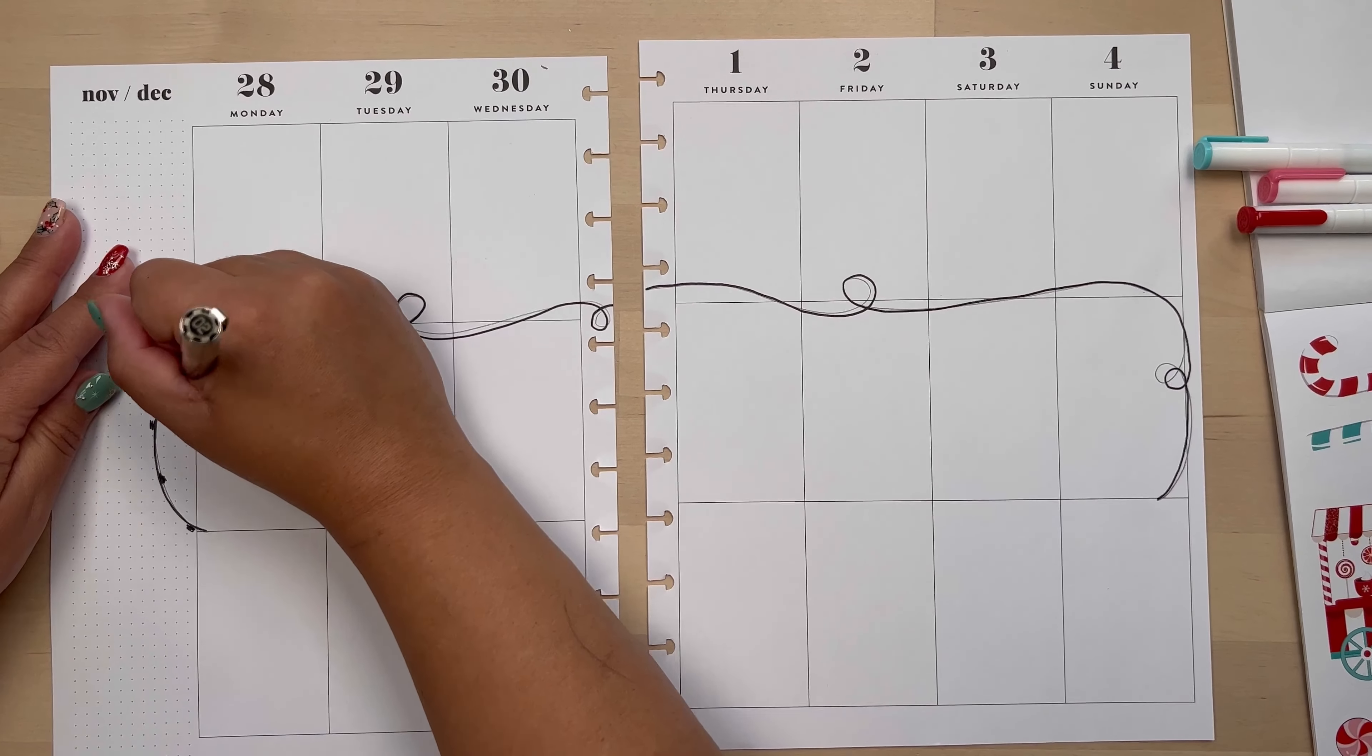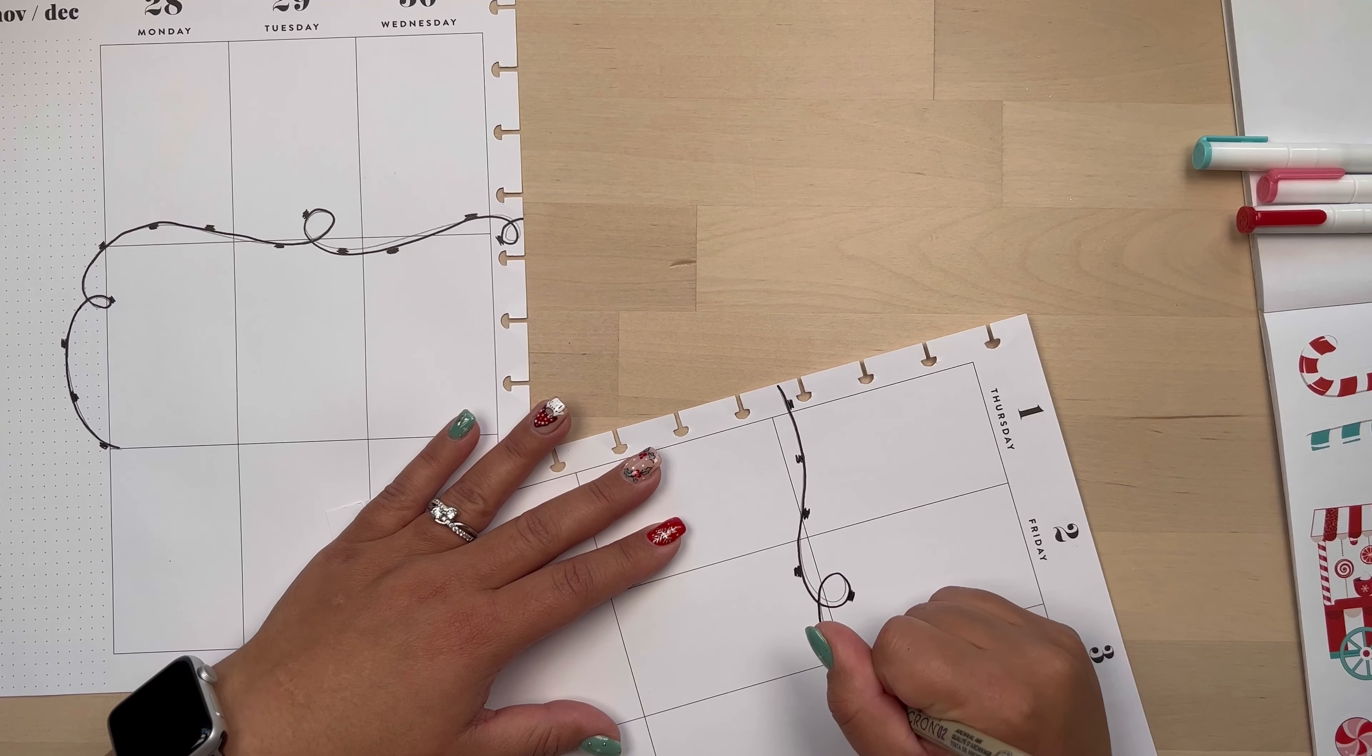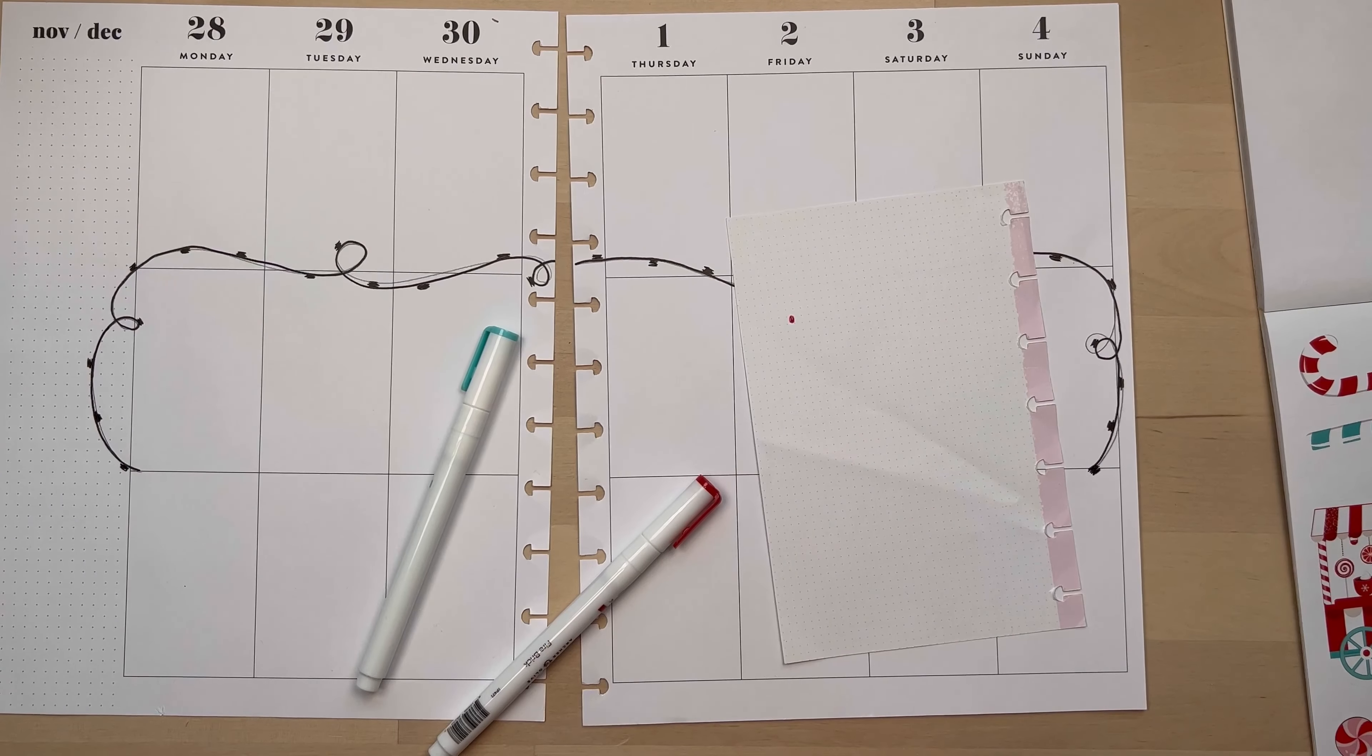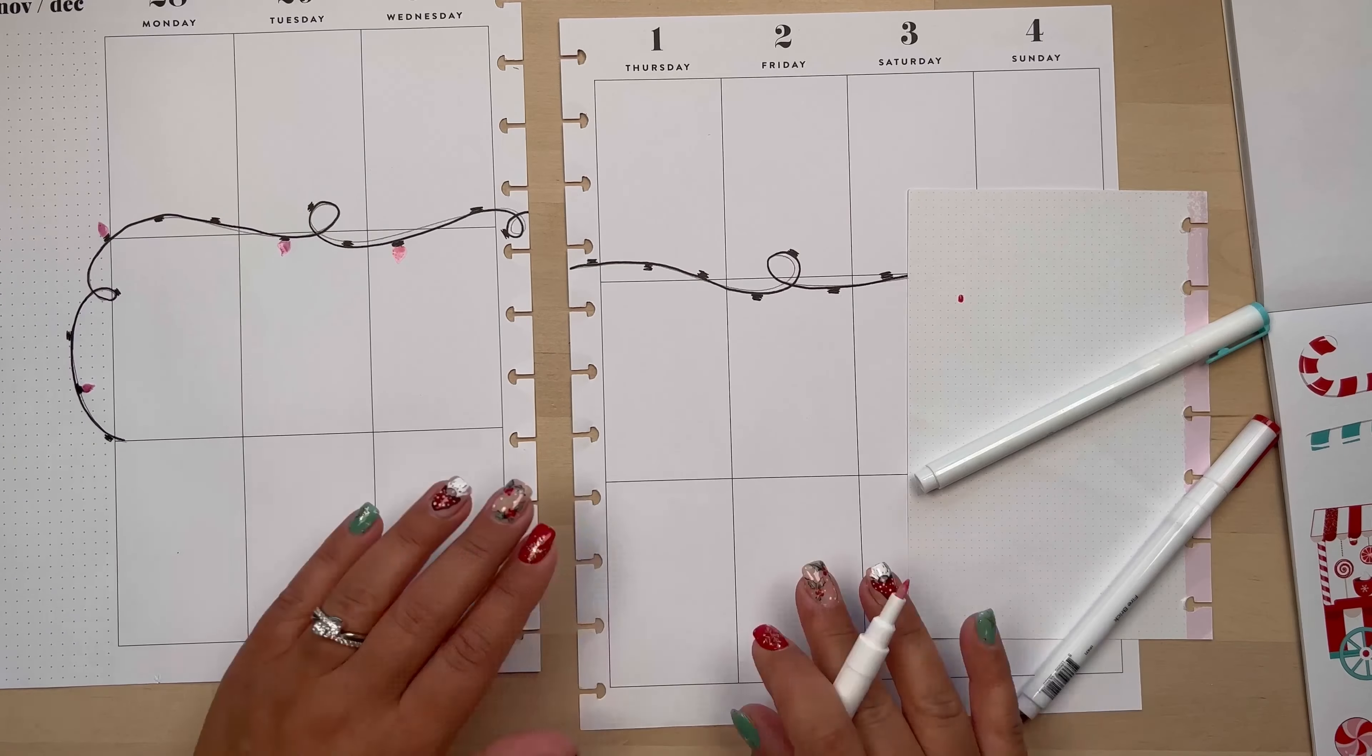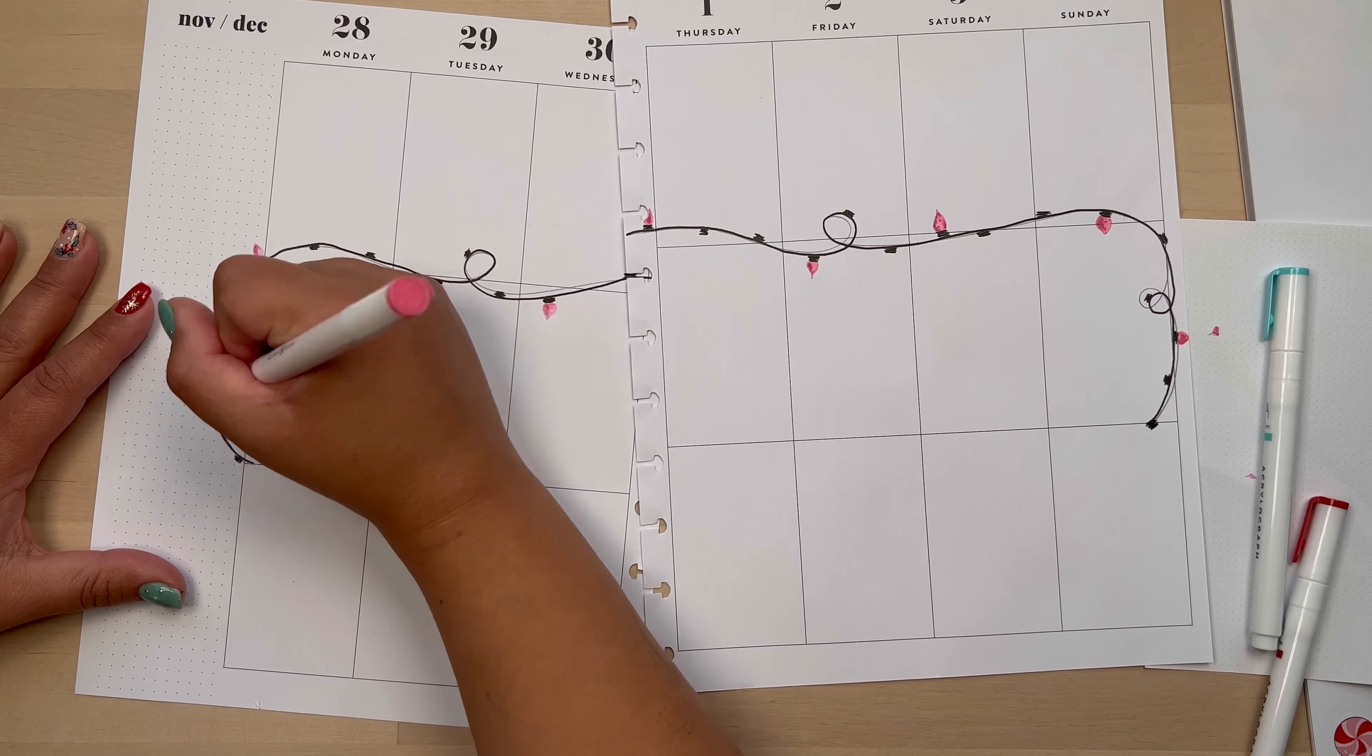So I did use first a pencil to trace where I wanted my Christmas lights. Then I took a Pigma Micron 0.8 and I did my cable for the lights. Then I used a Pigma Micron 0.2 to do the light sockets. Now I am taking the colors pink and I'm going to alternate it. As you can see, I start really small with my lights and then once I got to the end, they started getting bigger. I really like the bigger ones, so when I go over it the second time, I make them bigger.